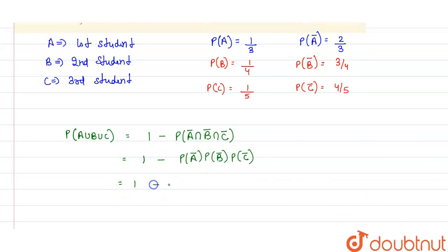This comes 1 minus probability of A bar that is 2 by 3, here 3 by 4 and here 4 by 5. This and this will cancel out, this and this will cancel out. This comes equal to 3 by 5. That problem is solved simultaneously equals 3 by 5.